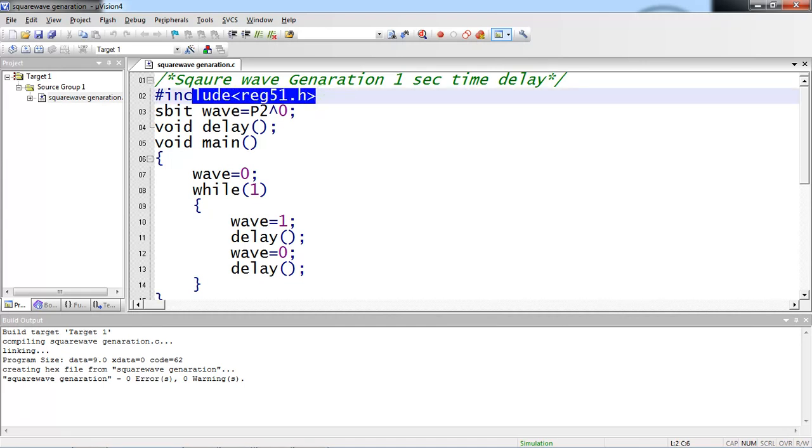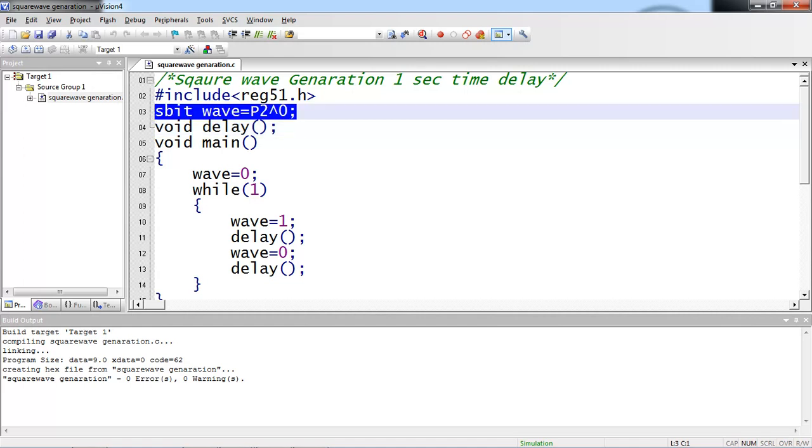Let us see the first line of this program, hash include reg51.h. This allows to use all SFR register names related to 5-1 families without any declaration.